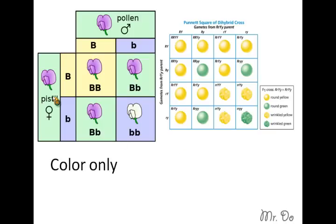Over here, this one, you're dealing with color only, so it can either be purple or white. Whereas over here, you're dealing with either yellow or green, and also round versus wrinkle. So it can be a yellow round, or a green round, or a yellow wrinkle, or a green wrinkle. So you're dealing with colors and shape.